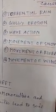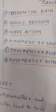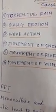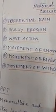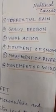Number three is wave action. The waves spread sediment along the coastlines, which causes soil erosion.